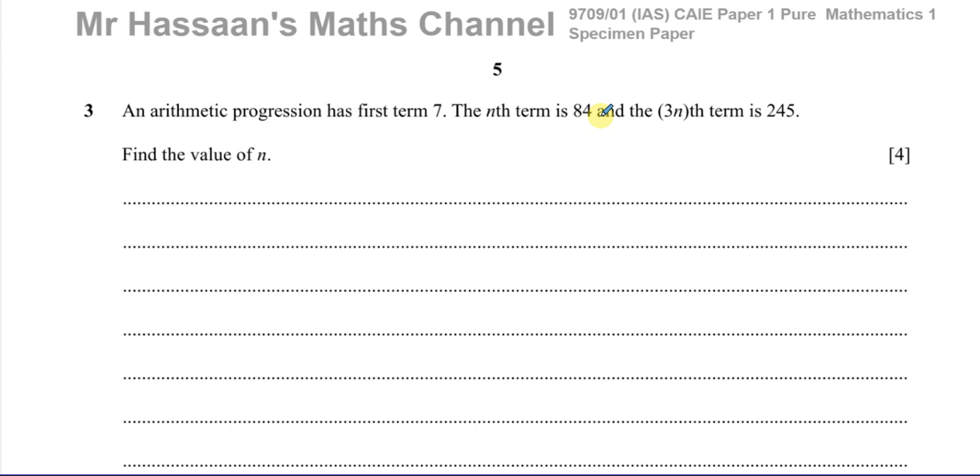This question is about arithmetic progressions or arithmetic series. We're told that an arithmetic progression has a first term 7, the nth term is 84, and the 3nth term is 245. Find the value of n.